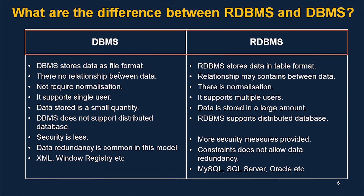In DBMS there is no relationship between the data, whereas in RDBMS relationships can exist between the data. The next point is normalization — normalization is not required in DBMS, but in RDBMS there is normalization, which we will discuss in a future session.